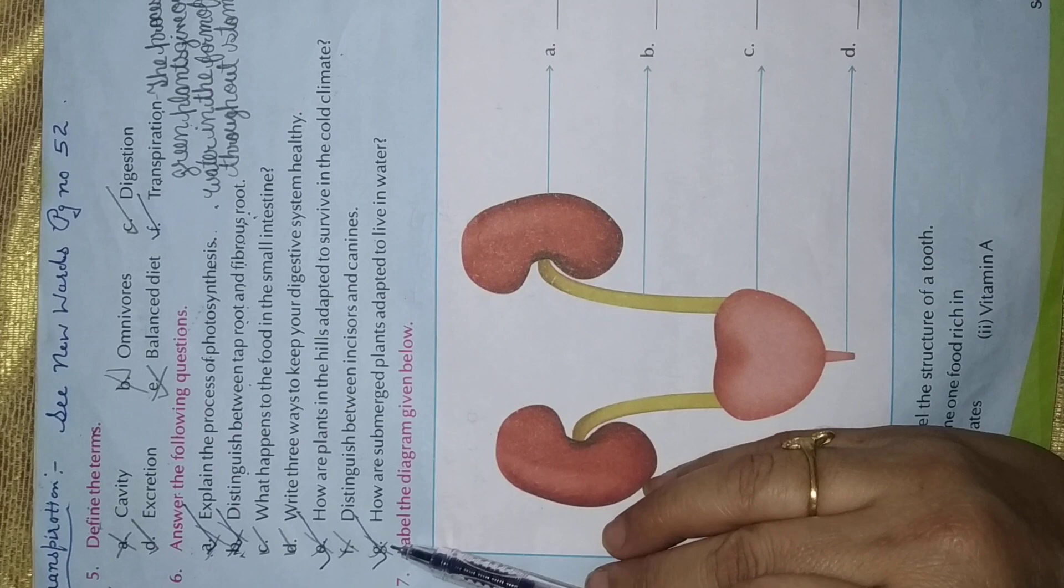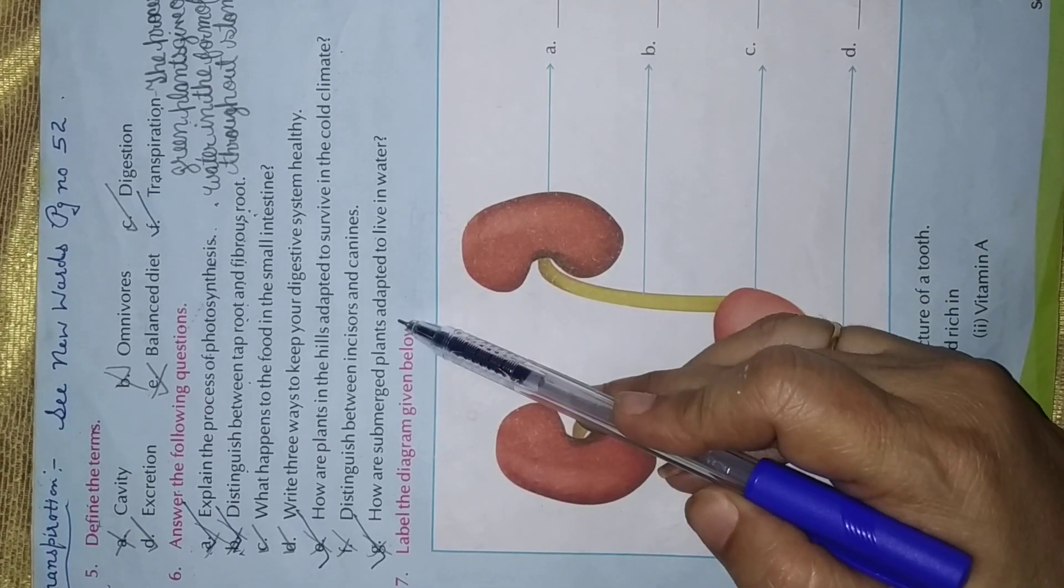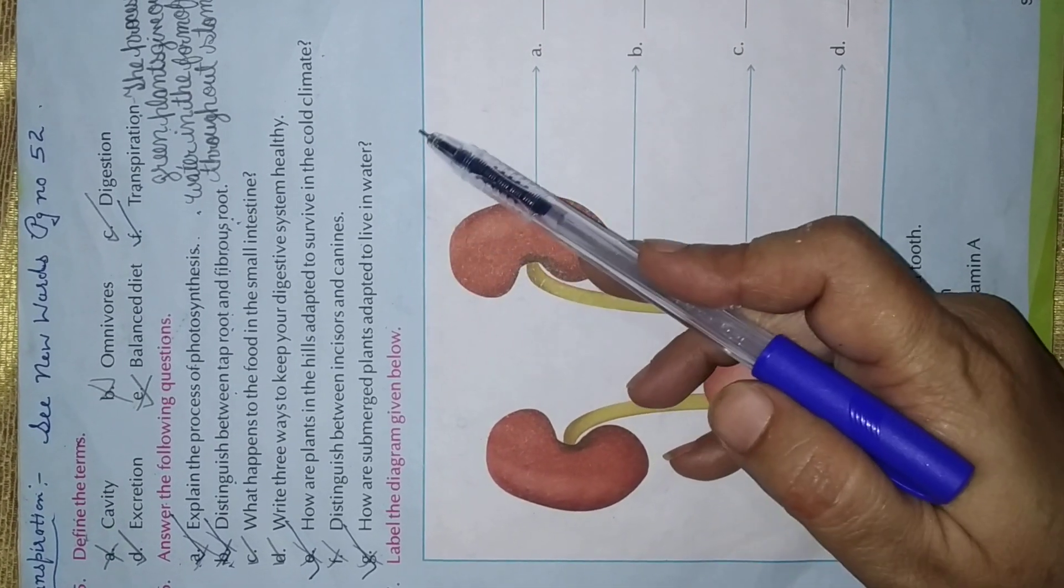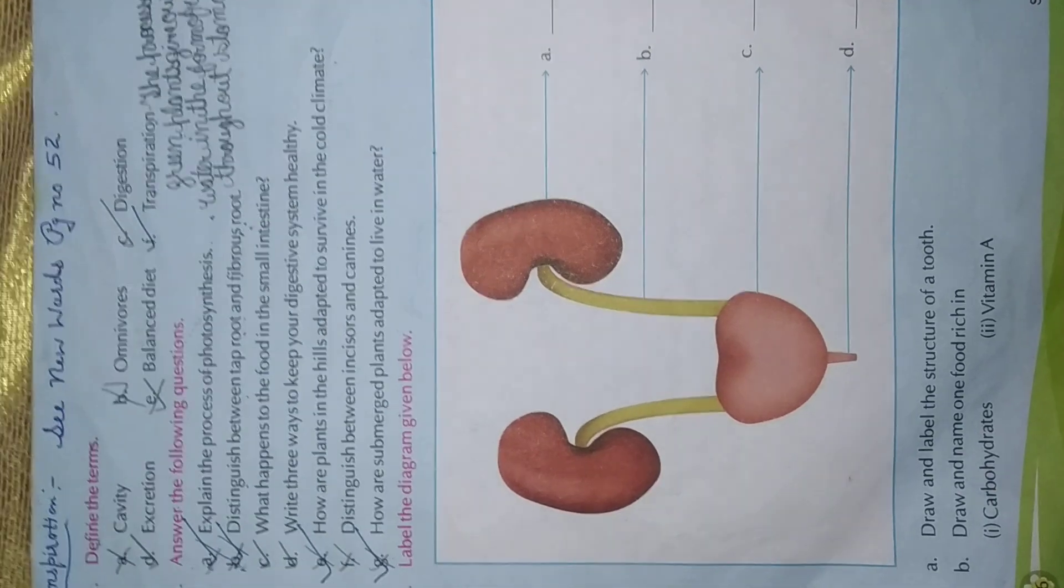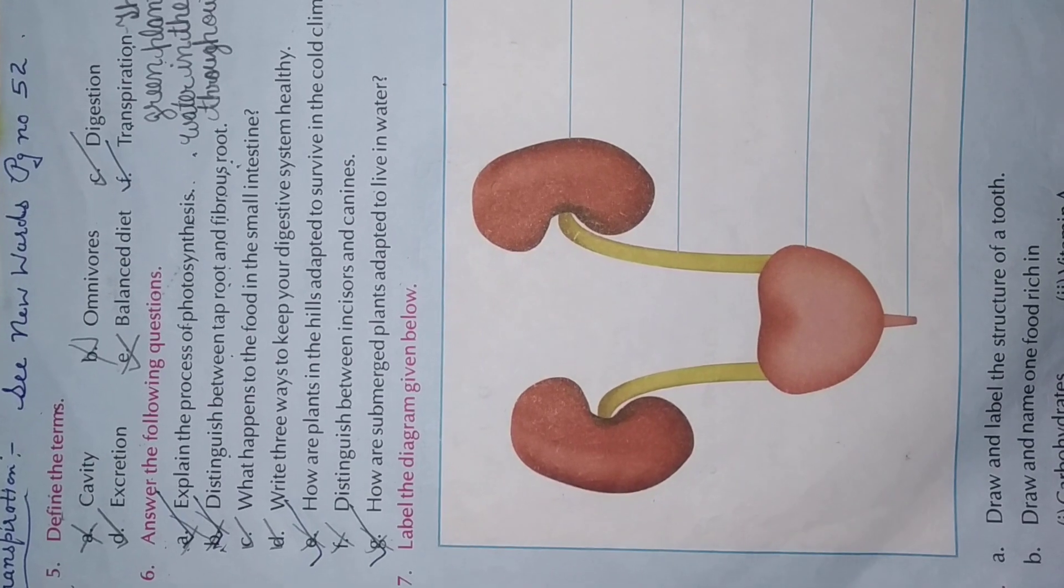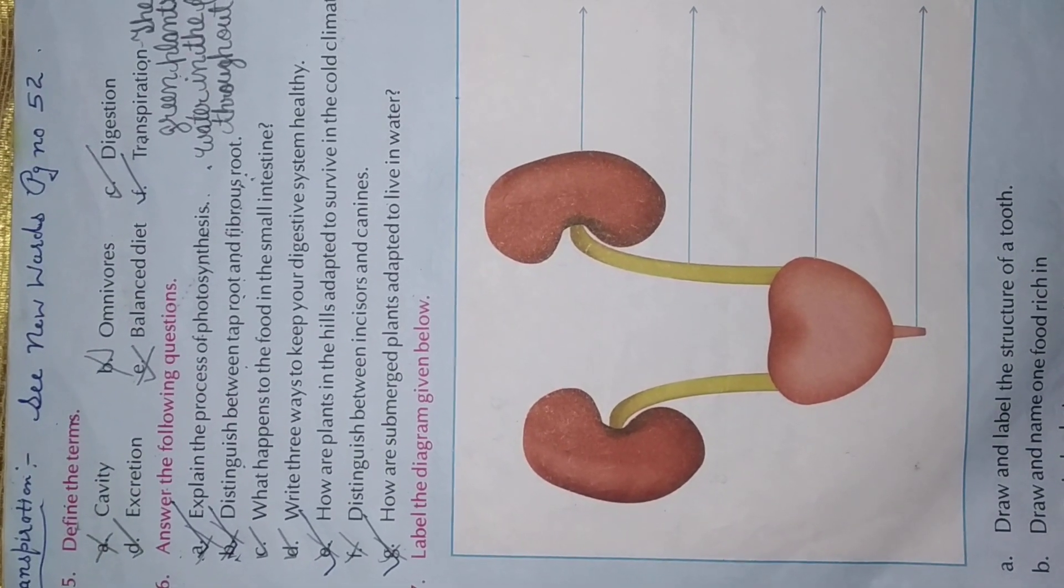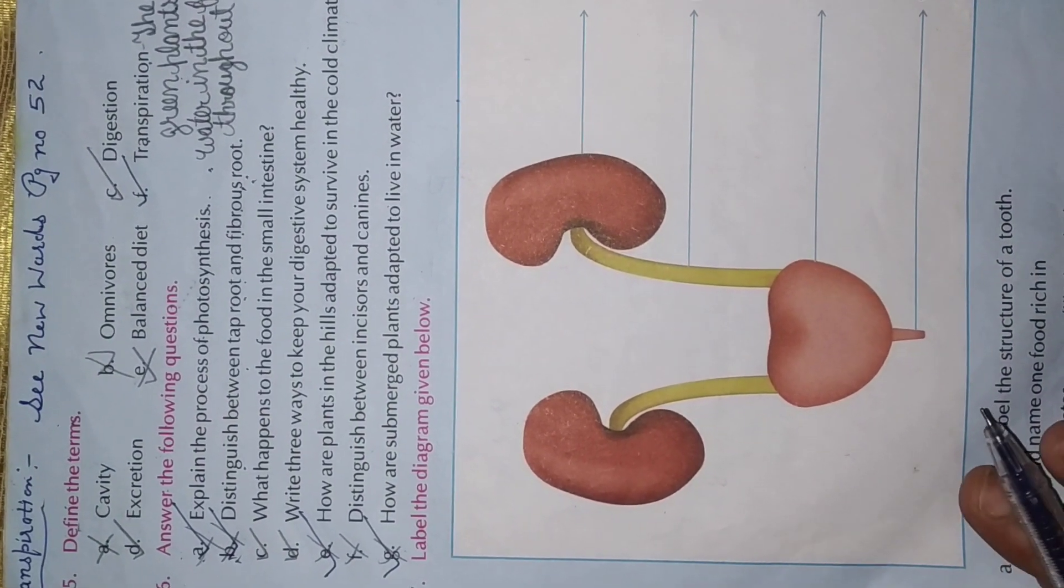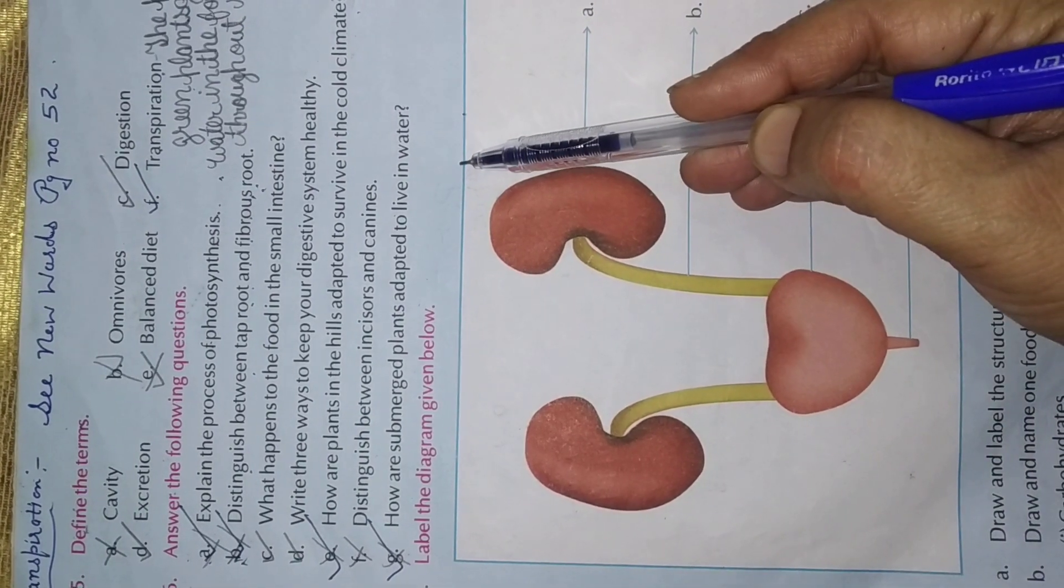Next question. G. How are submerged plants adapted to live in water? Their roots fix them in the muddy soil. The leaves are narrow. And there is no stomata. The stems are flexible. Already we have done. You can see your classwork copies.